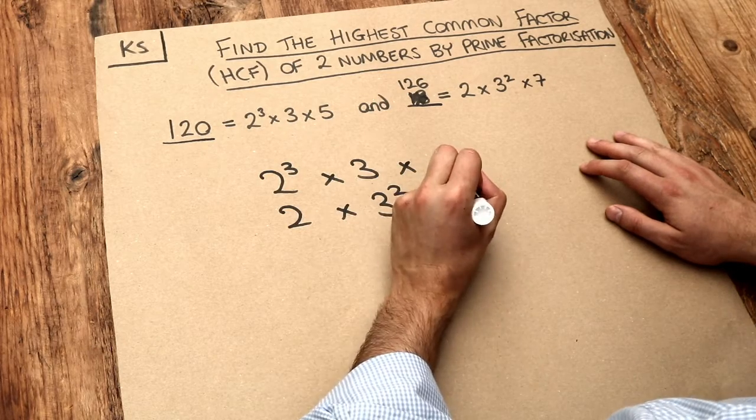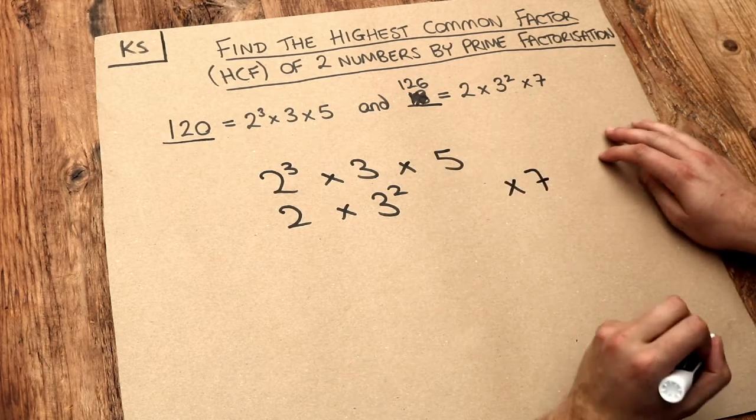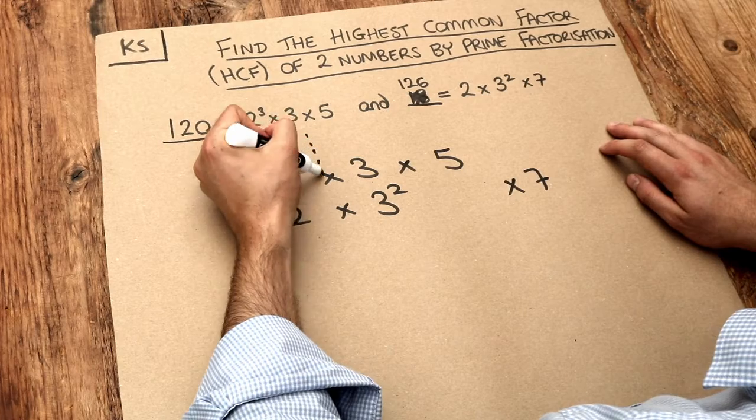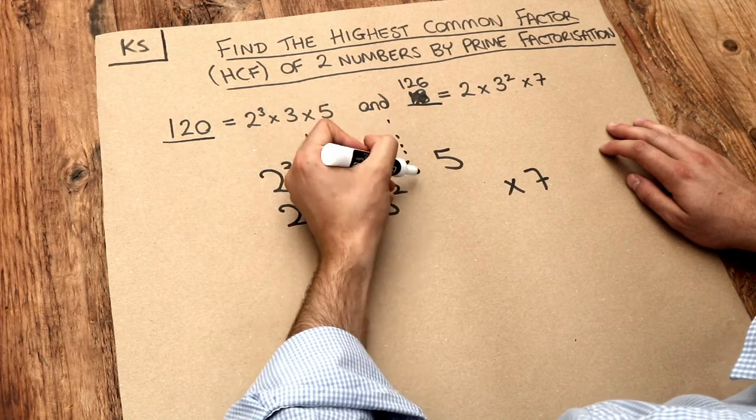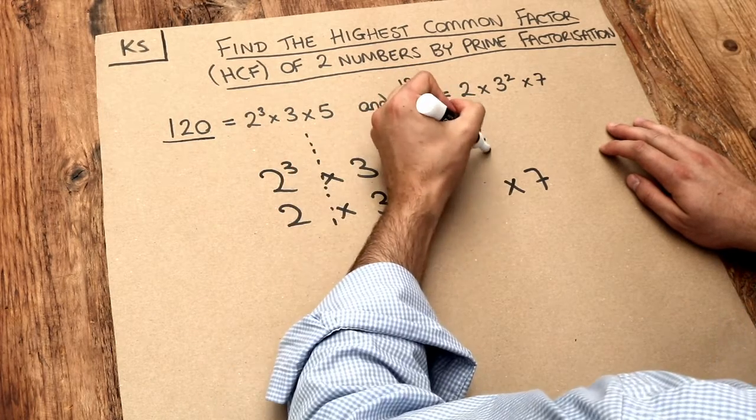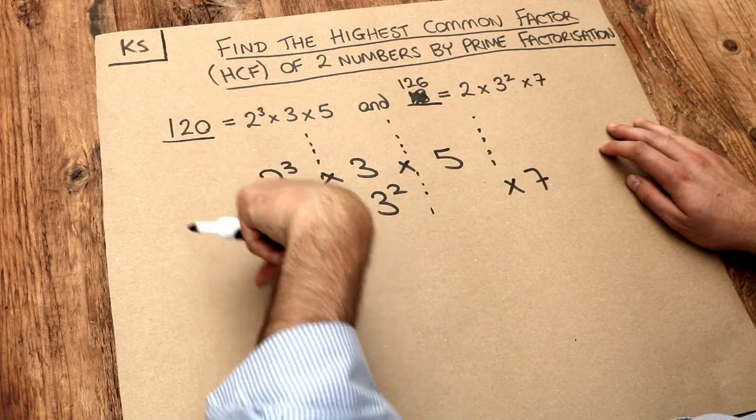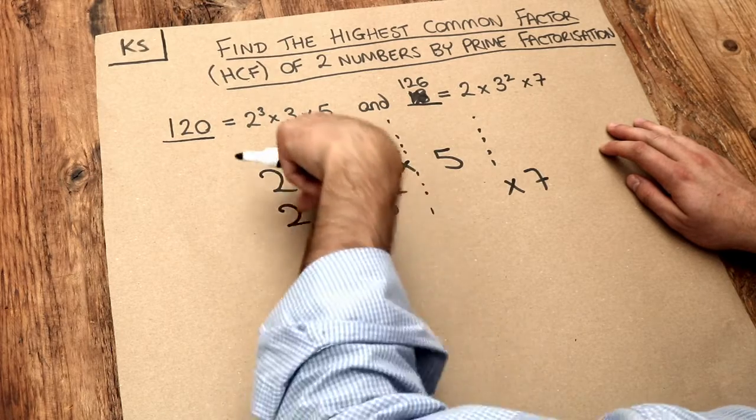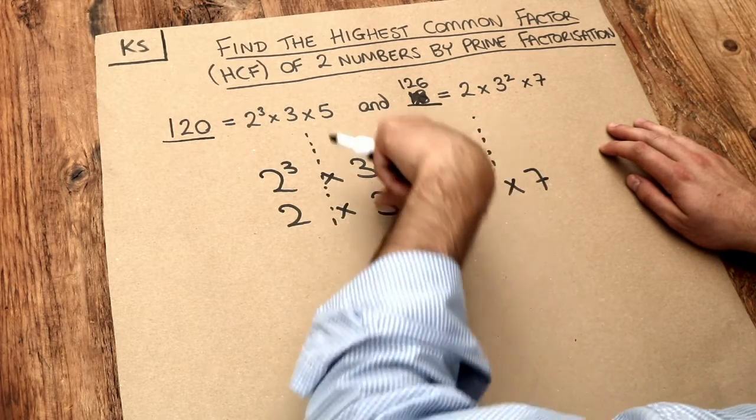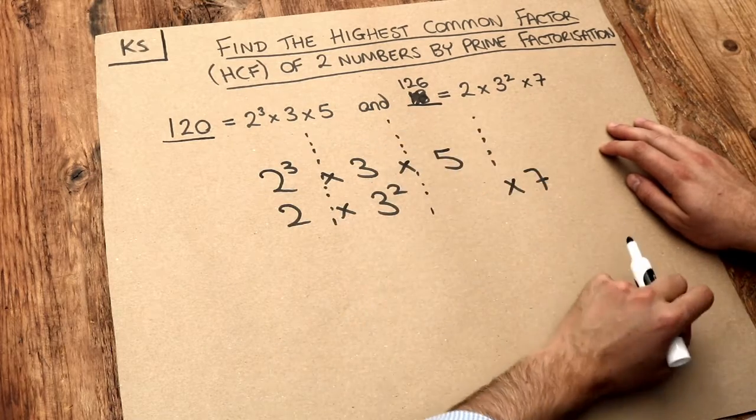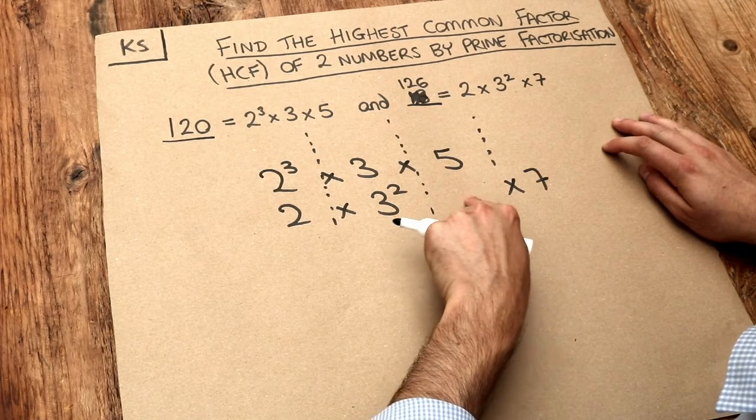Now I'm going to leave a blank space here and write the seven here. The reason is that you need each column to involve the same prime factor. So this involves powers of two, this involves powers of three, this column involves powers of five, this column involves powers of seven. Notice we've left that space blank.